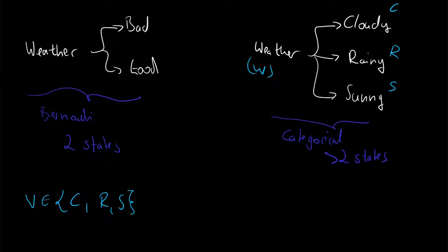And similarly to the Bernoulli distribution, we can encode them with numbers. So we can say cloudy is zero, rainy is one, and sunny is two.